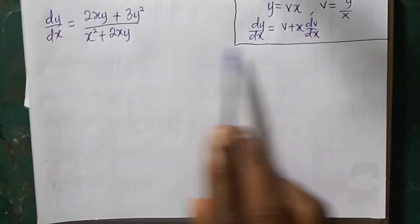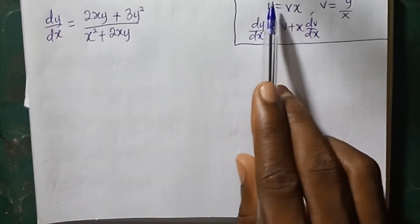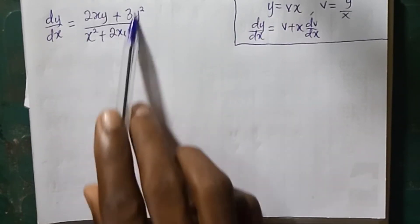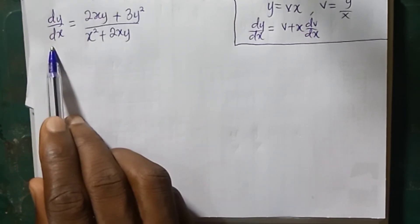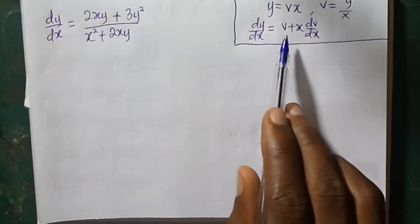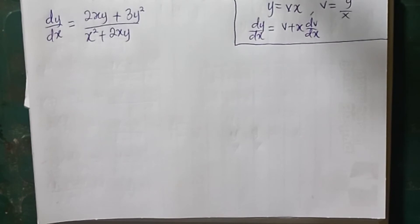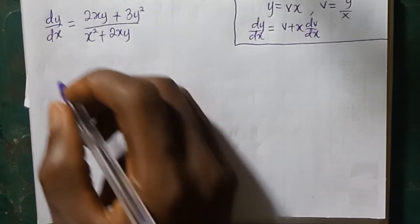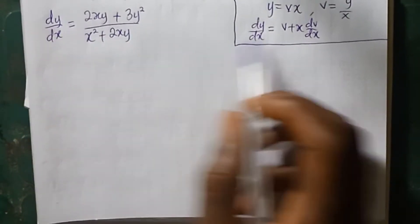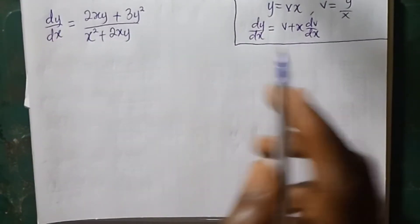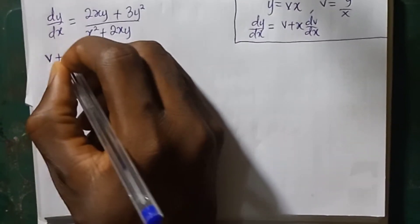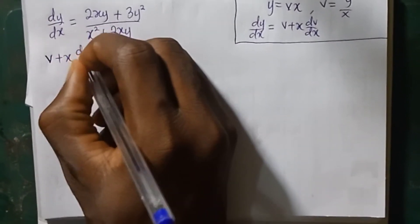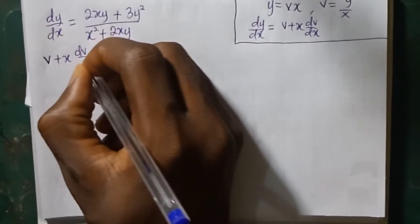Therefore, we are going to substitute for y and dy over dx in our main equation. dy over dx is now equal to v plus x dv over dx. So instead of dy over dx, we write this: v plus x dv over dx.